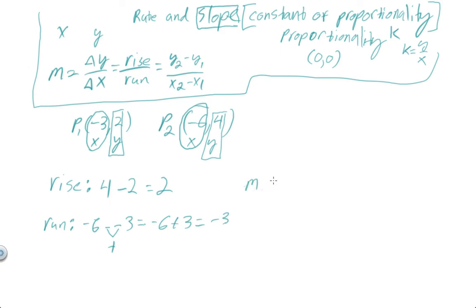Our rise is positive 2, and that means that our slope, our m, or our slope, is equal to our rise, which is 2, over, or divided by, our run, which is negative 3.